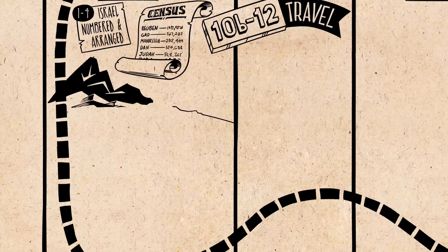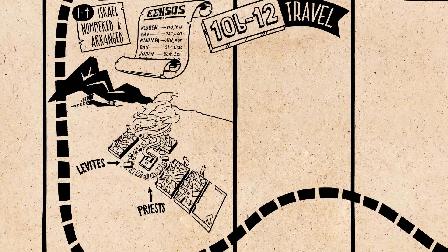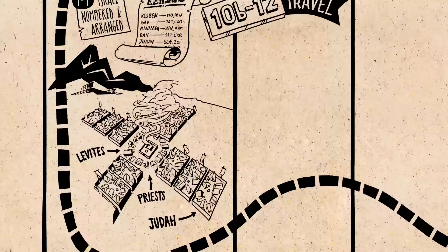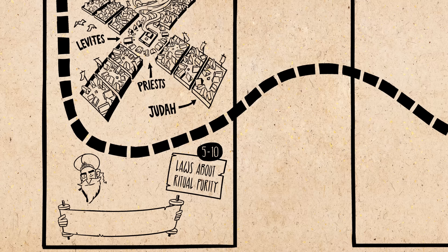The first part opens with a census where the people are numbered — that's where the book gets its name. Then there are laws about how the tribes of Israel were to be arranged in their camp. The tabernacle was to be at the center, then around that the priests and the Levites, and then around them the twelve tribes neatly arranged with Judah at their head. This was all an elaborate symbol about how God's holy presence was at the center of their existence as a people.